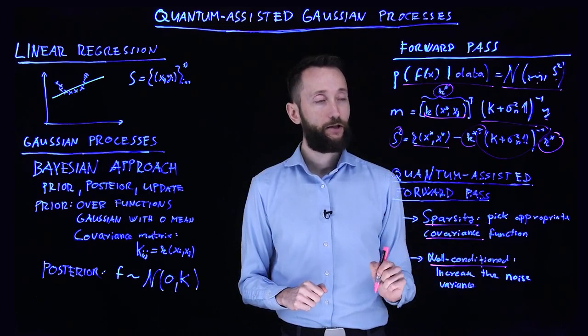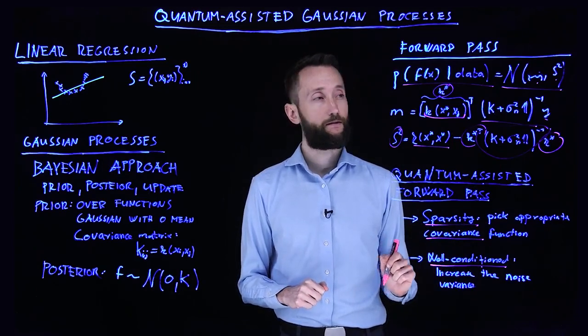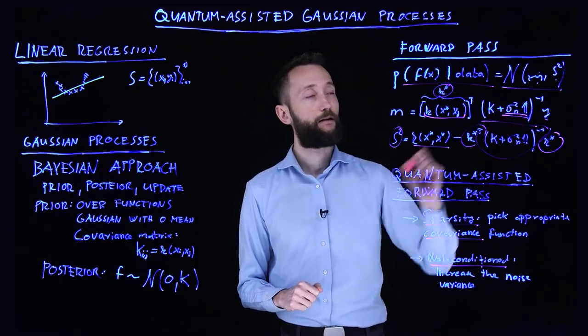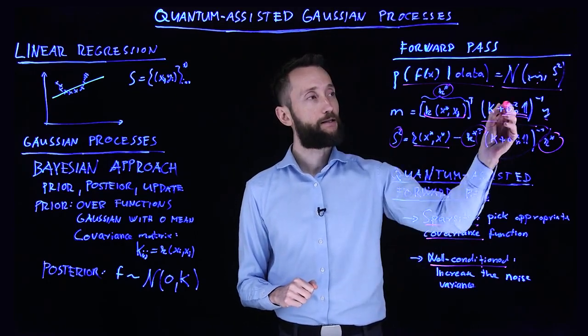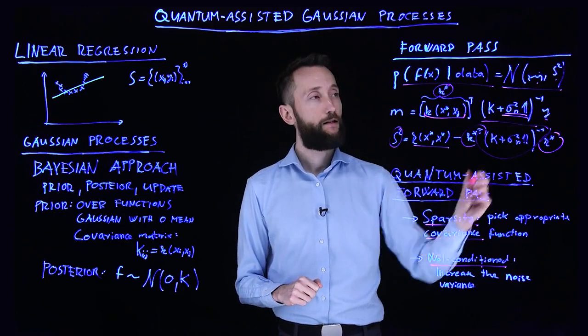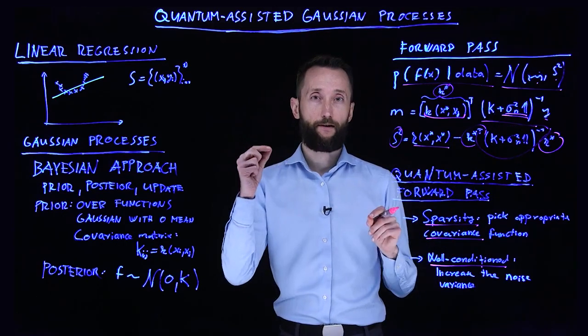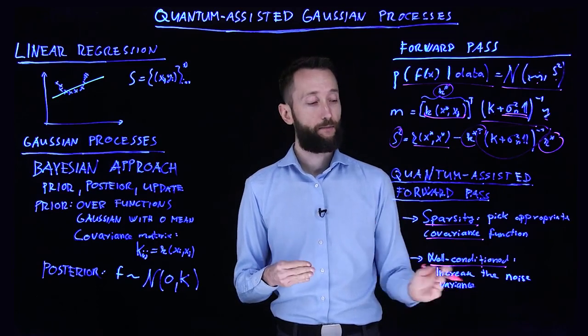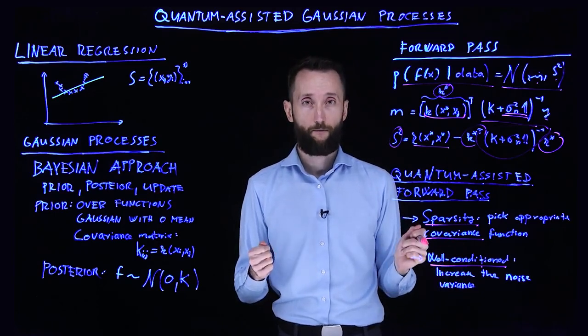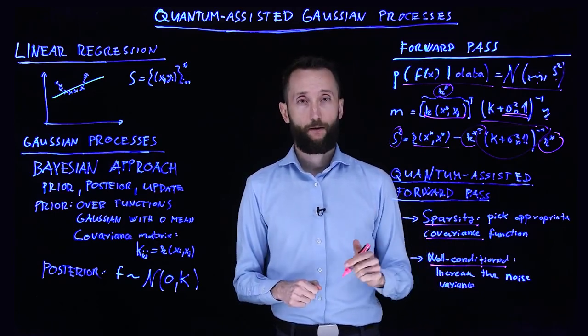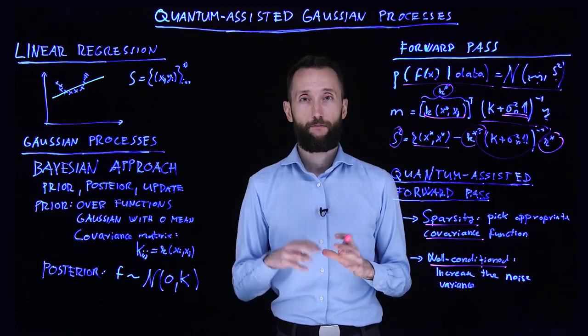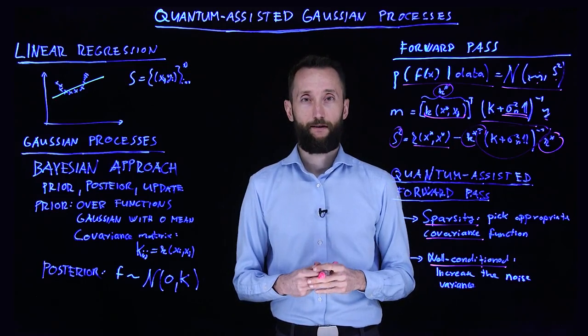And conditioning this matrix is also not so difficult since you have this extra term here. And by increasing the variance of the noise, you can increase the values on the diagonal, which will affect how well conditioned your matrix is. So by increasing the noise, you can make it more well conditioned. So both conditions are met. You are free to run the quantum matrix inversion, provided that you have a sufficiently large quantum computer. Let's go.